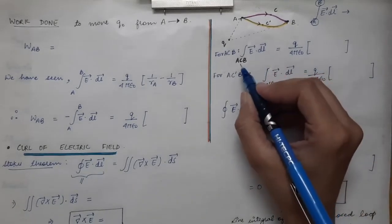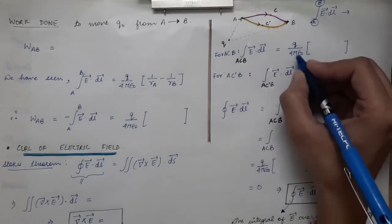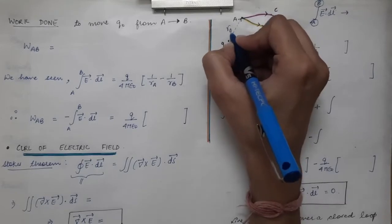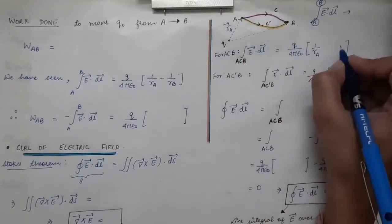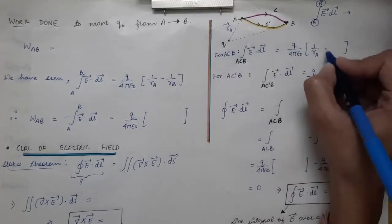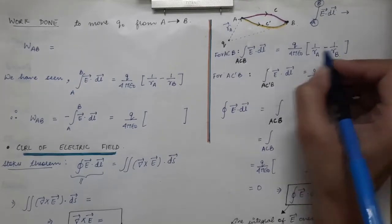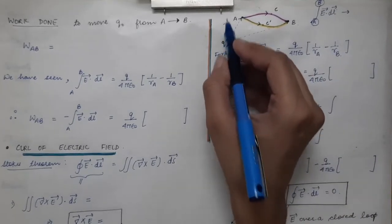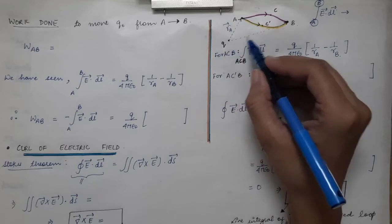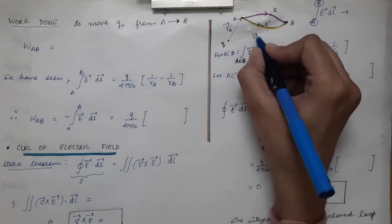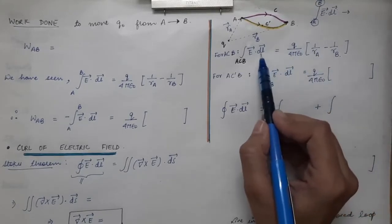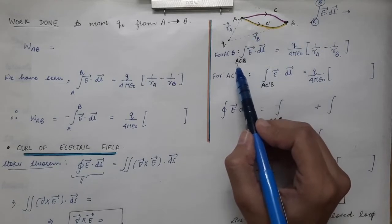R_A is the position vector of the initial point — the vector from the source charge to point A. The source charge Q is supposed to be present at the origin. So R_A vector is the position vector of point A and R_B vector is the position vector of the final point B. This is the equation of the line integral of electric field taken over the path ACB.